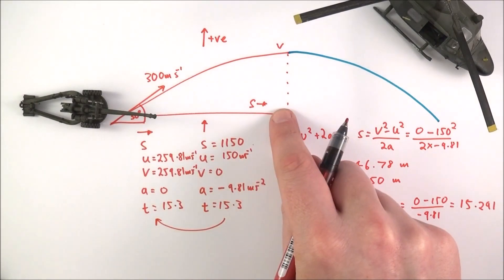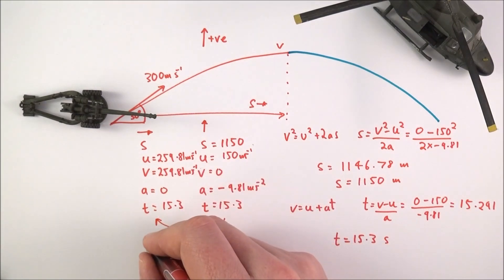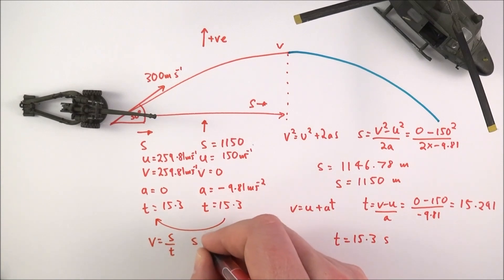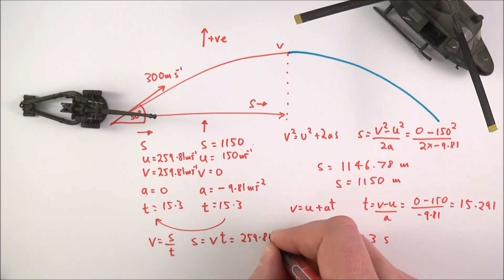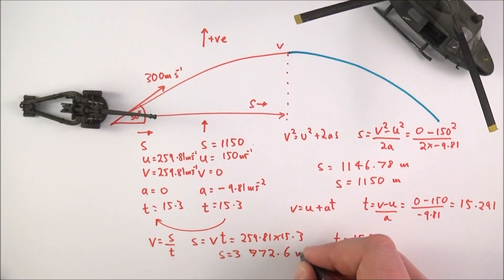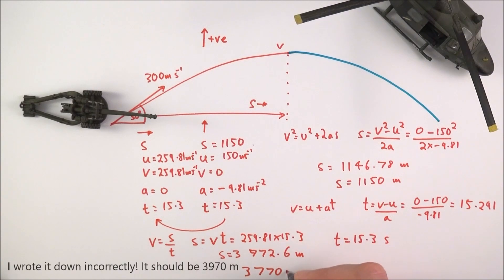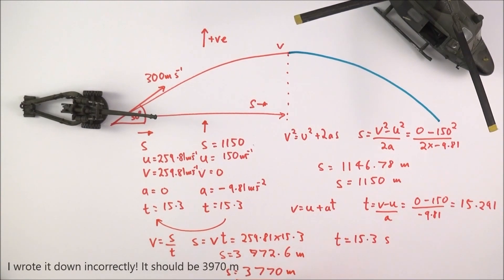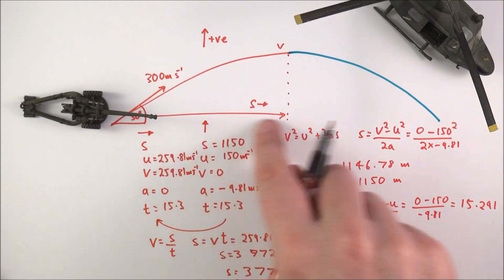To find the distance from here to here, I can use displacement equals velocity times time, which equals 259.81 times 15.3. The distance equals 3,972.6 meters, so the distance is about 3,770 meters, just under four kilometers. But the important thing is that is only the distance for the first half of the journey.